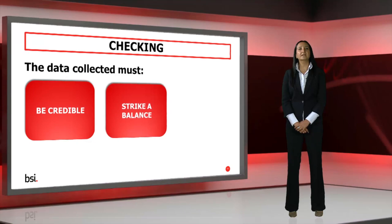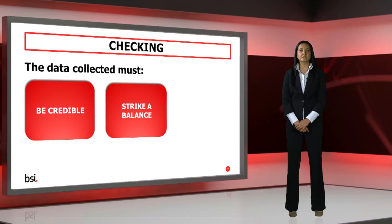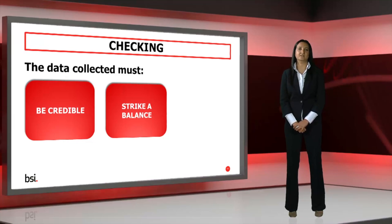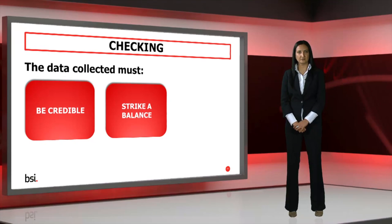Working out how much data to collect can be tricky. To some extent, this will be decided by your budget, particularly if you take on a lot of temporary sub-metering. If you are not using utility data, you will need to strike a balance between the amount of metering you do and the expected accuracy of your results.